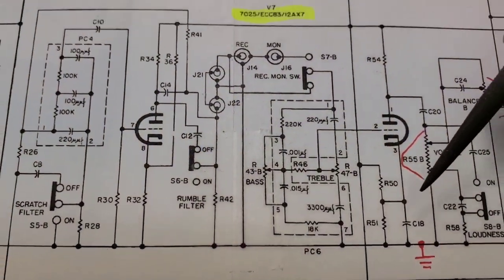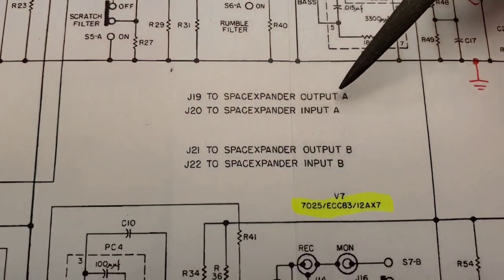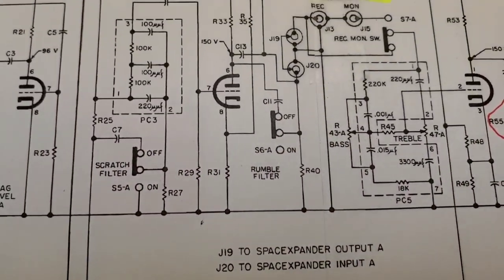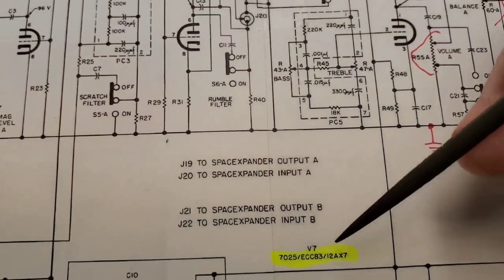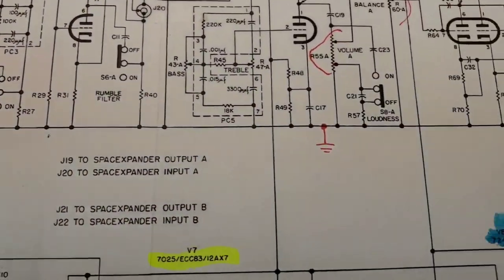Here's another printed circuit. And I marked all the tubes. Space expander. That's another story. That's not for this video. All it is is an echo box that Fisher made a lot of money with. And that's your basic amplifier.